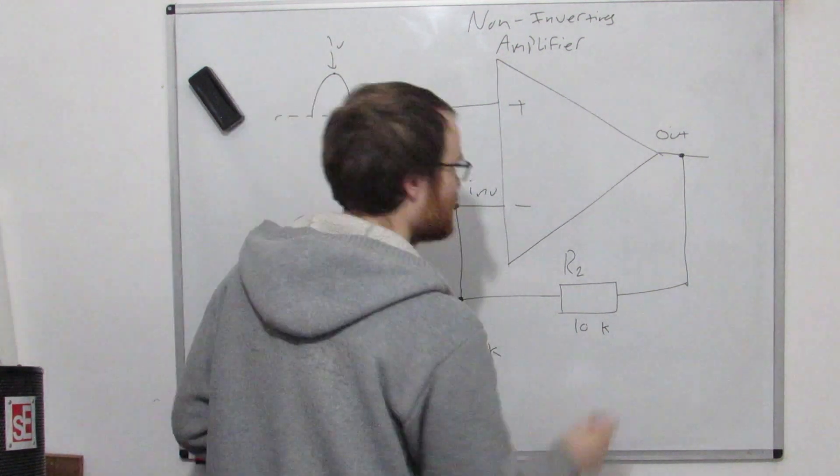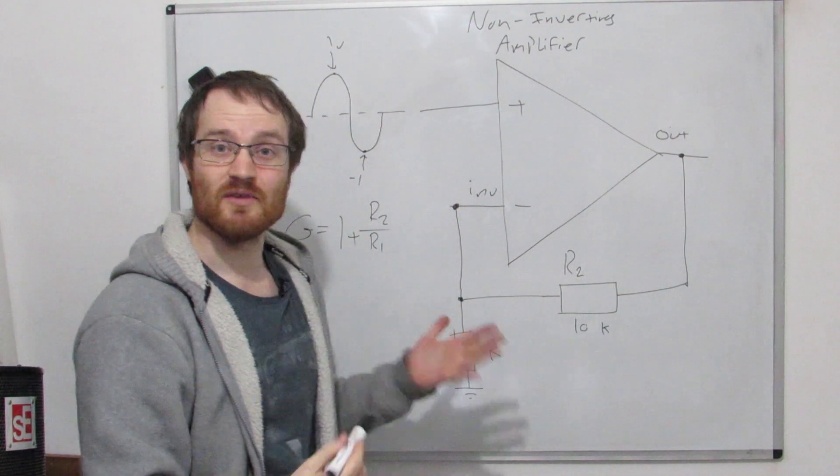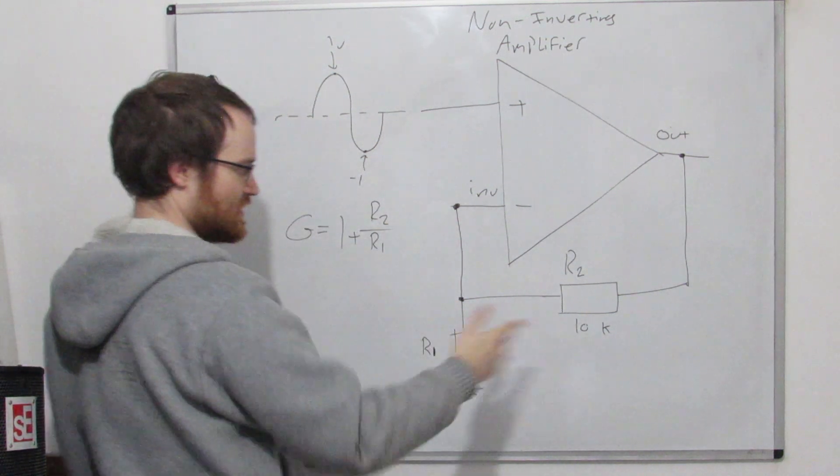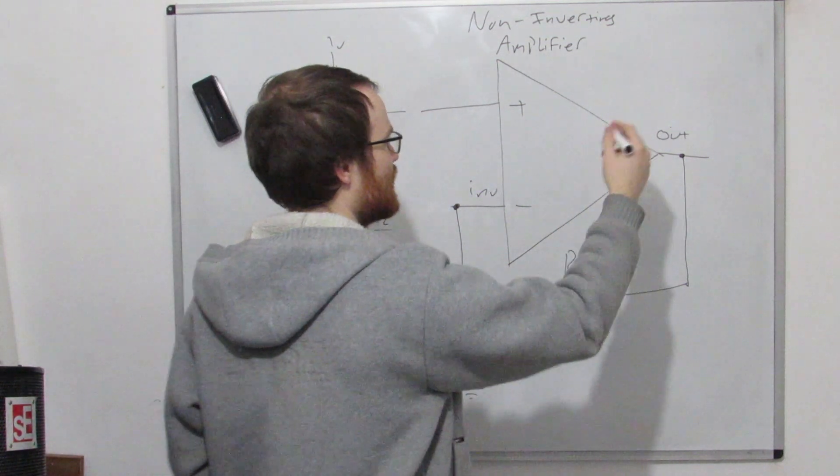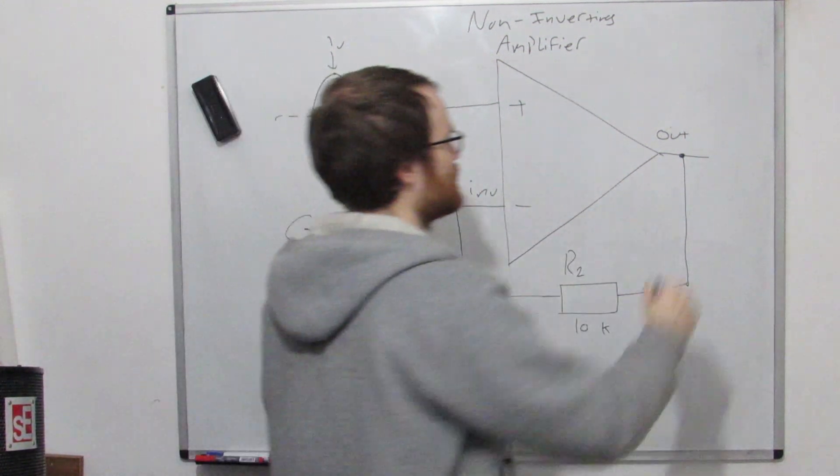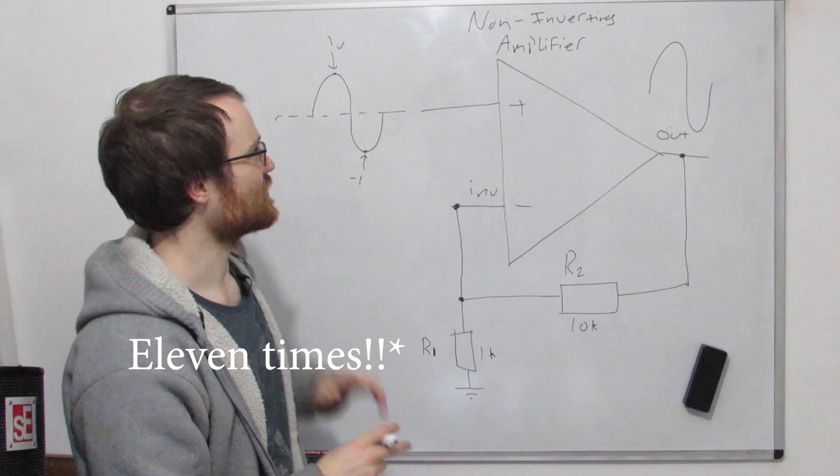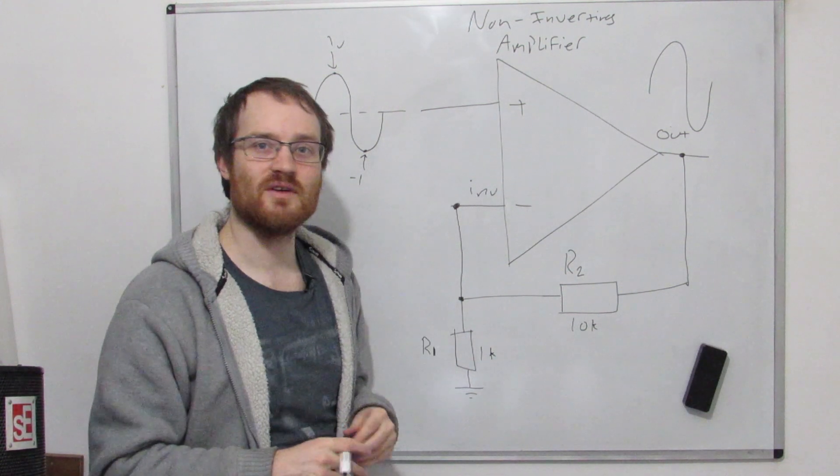Okay, so if this were 10k, then this output would have to be 11 volts to get 1 volt here. And so we can see that, let's just leave it like this, that we're going to get an output that is much bigger. We're going to have an output that's 10 times bigger than our input. That's how you make a non-inverting amplifier.